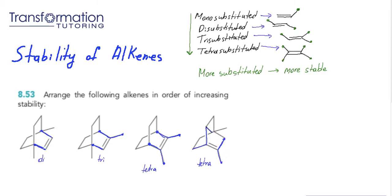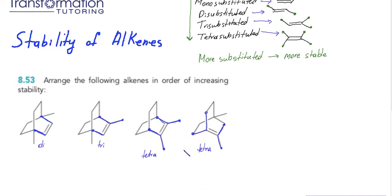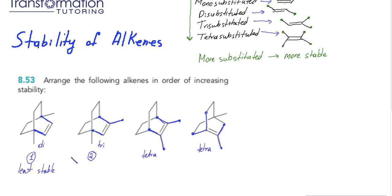Now that we know the substitution, we can arrange the double bonds in order of increasing stability — from least substituted to most substituted. The first one is the least substituted, so I'll give it number one and label it least stable. The next one is trisubstituted, so I'll give it number two. But then we have a problem: two compounds have the exact same substitution — both are attached to four carbons and are both tetrasubstituted.